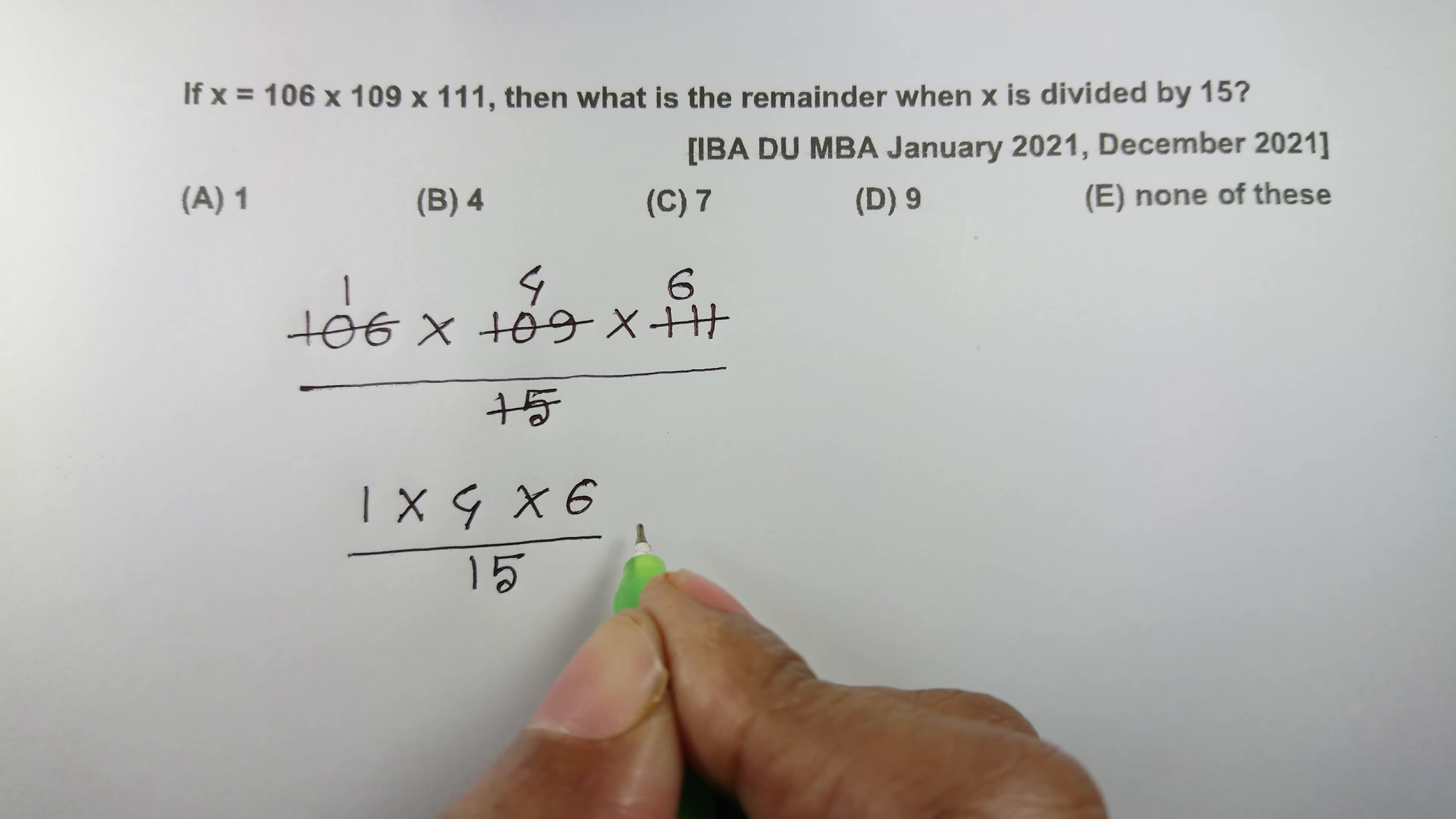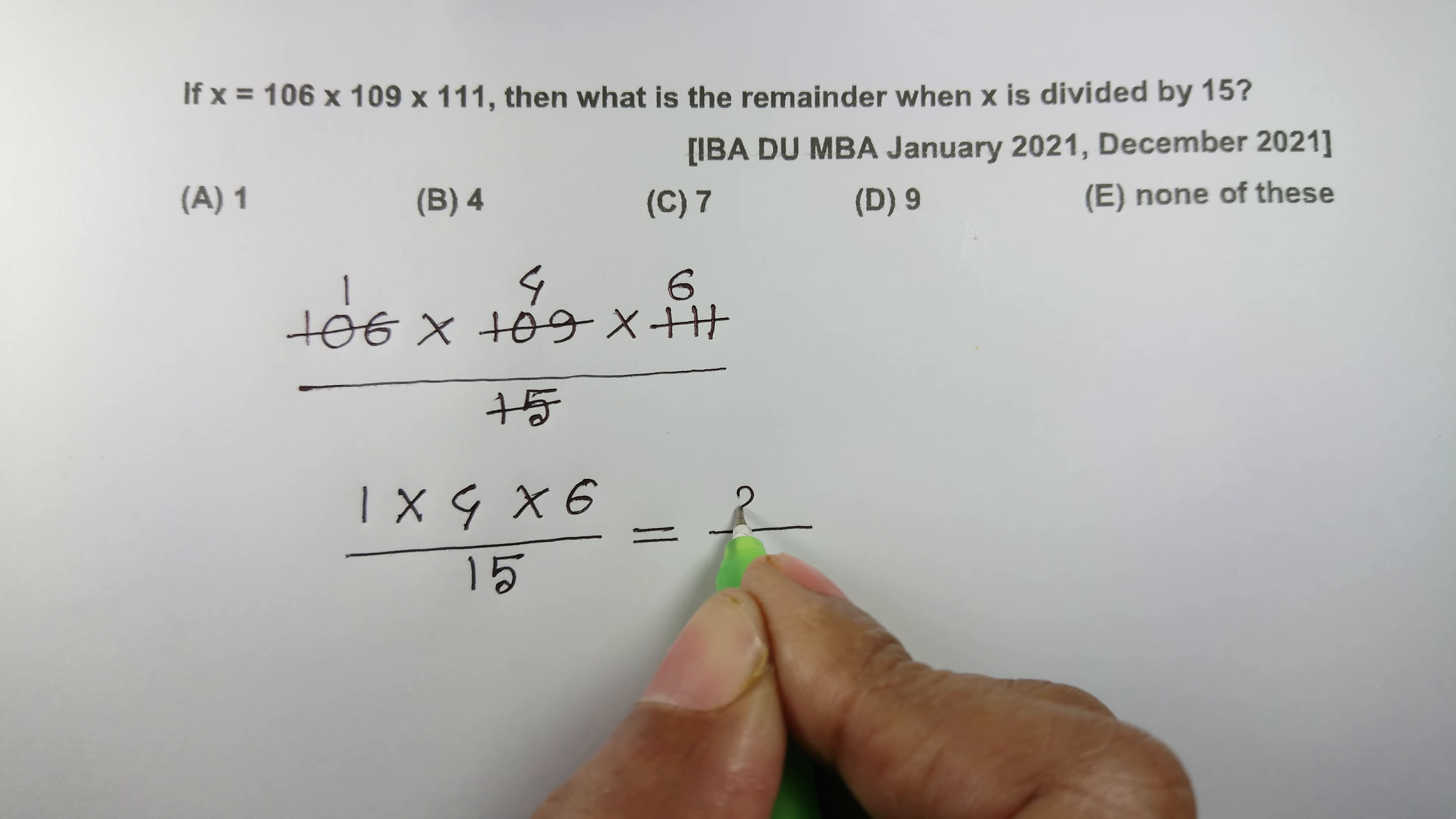1, 4 એ 6 મલ્ટિપ્લાય ગુણાકાર 24 એ 15 થી ડિવાઇડ કરવા